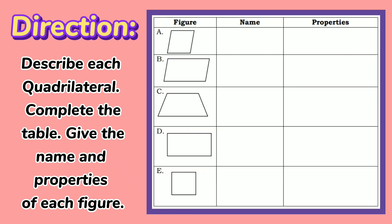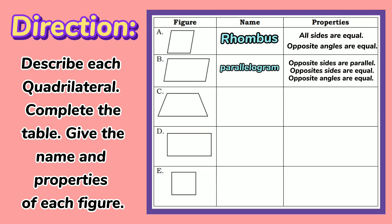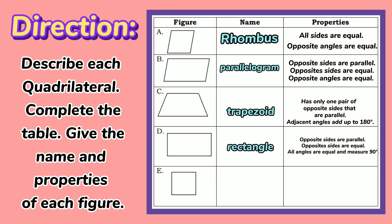Letter A is a rhombus. Letter B is a parallelogram. Letter C is a trapezoid. Letter D is a rectangle. And letter E is a square.